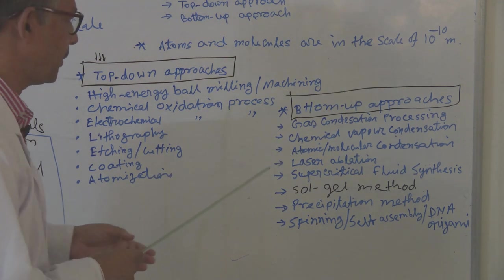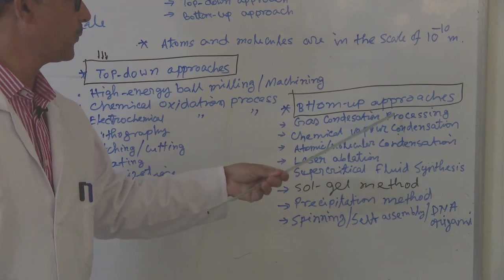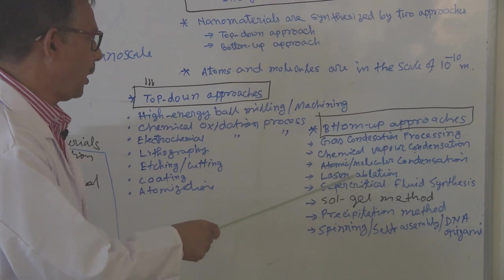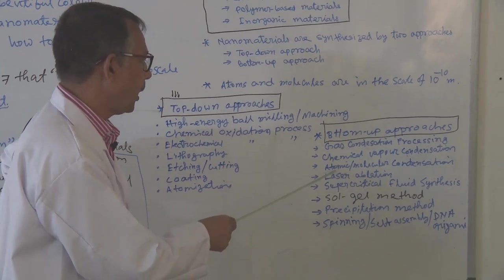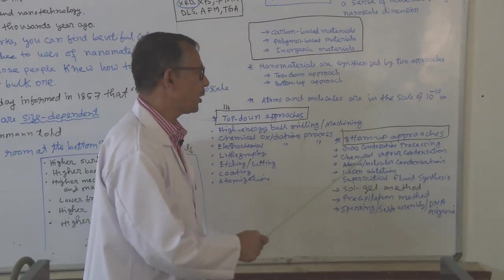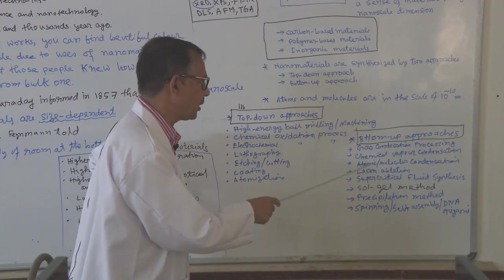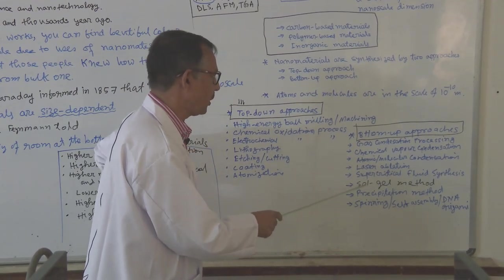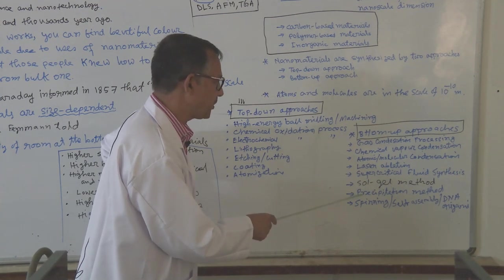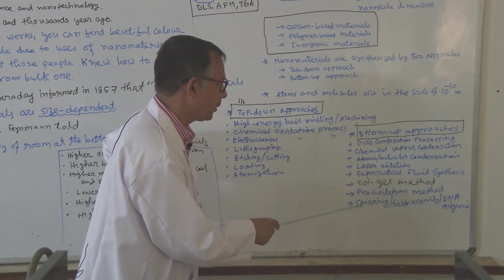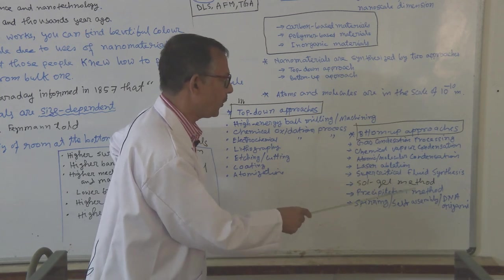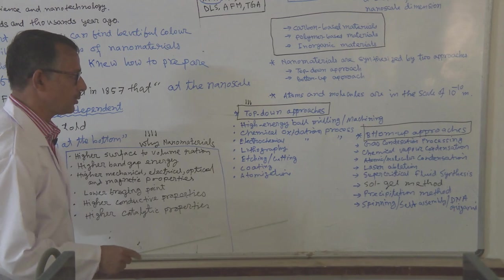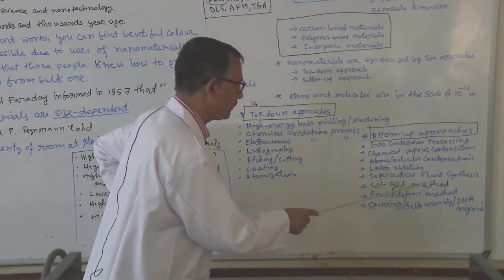If you look for bottom-up approaches, gas condensation processes, chemical vapor condensation, atomic or molecular condensation, laser ablation, supercritical fluid synthesis, sol-gel precipitation methods, spinning, self-assembling or DNA origami. So in our process, we are going for sol-gel methods.